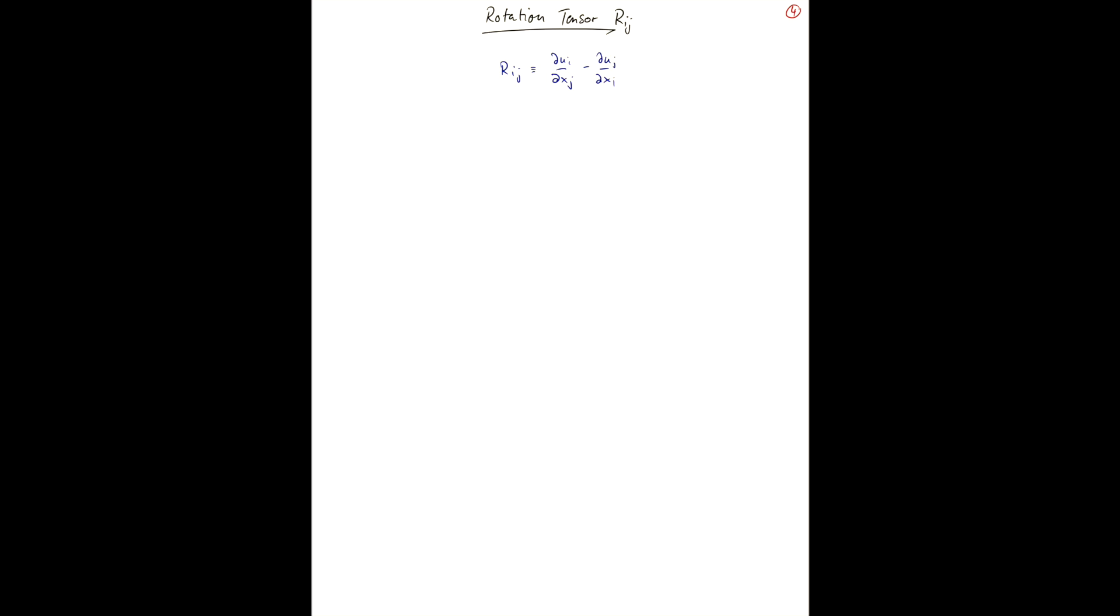Now, this tensor is anti-symmetric, and so it can be written as a vector, as we've discussed previously in the tensor chapter. And in this particular case, we call this vector the curl of U omega, which is the vorticity.